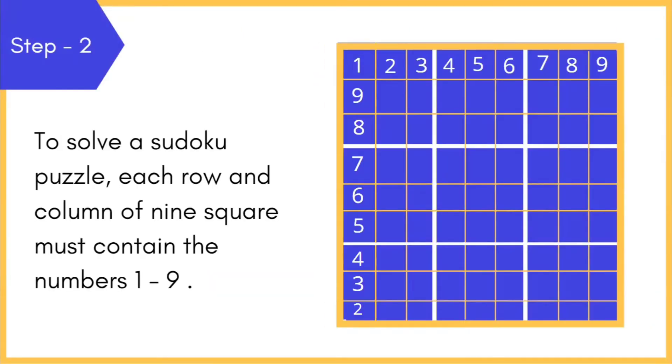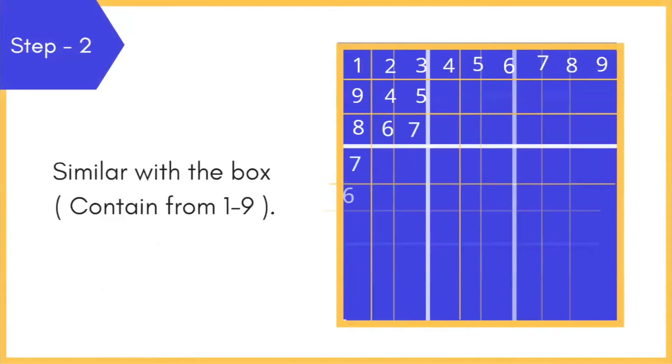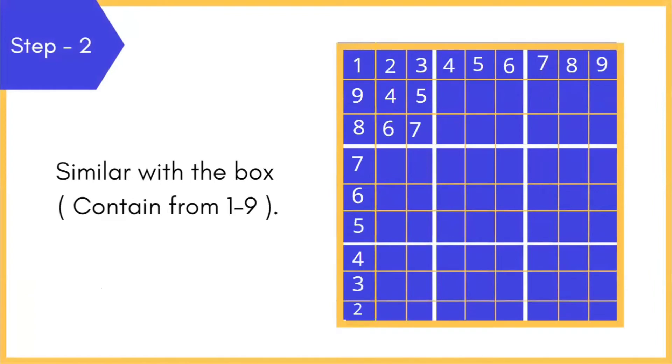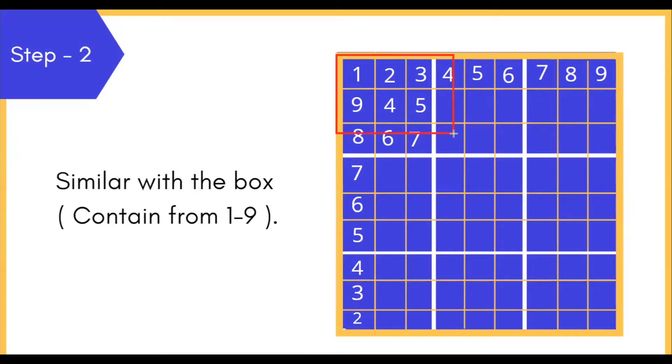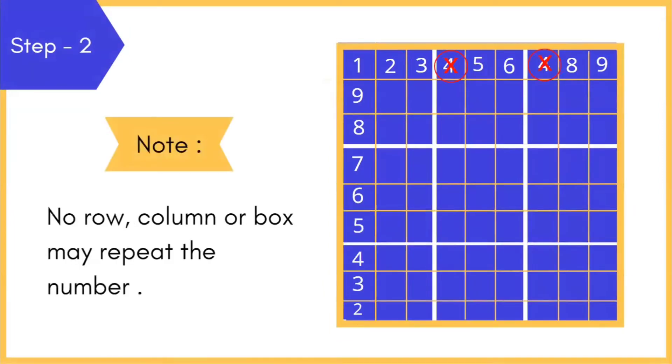Now, continuing with understanding the pattern, here is one more thing that you need to know. To solve a Sudoku pattern, each row and column of nine squares must contain numbers from one to nine. Now, as we talked about row and column, the same thing happens with a box. A box contains numbers from one to nine also. Very important thing, and you should take a note of this: no row, column, or box may repeat the number.